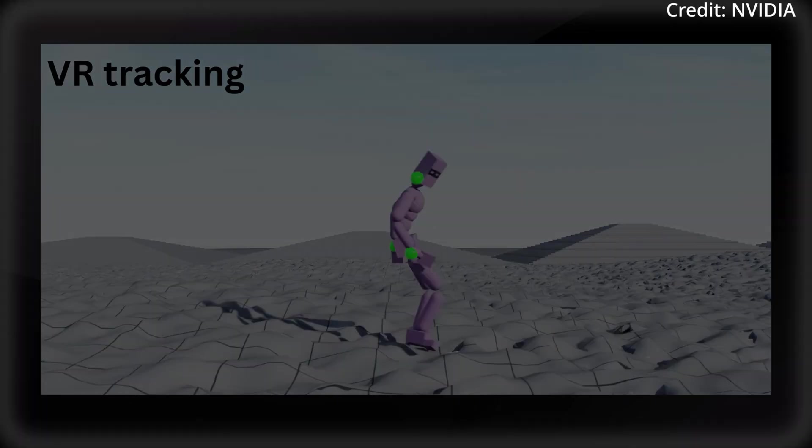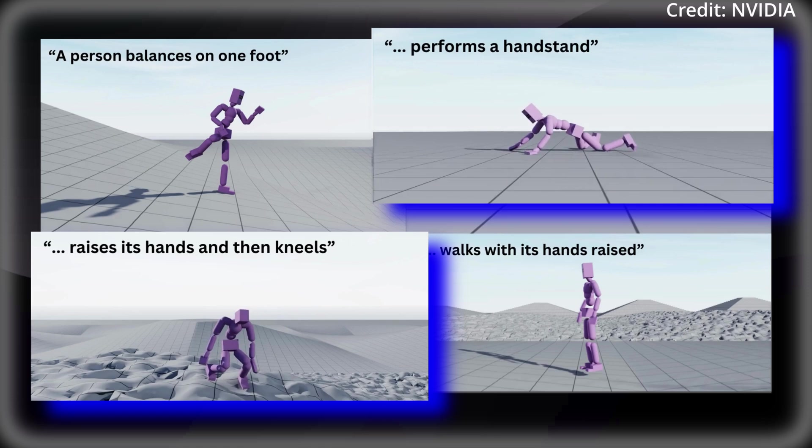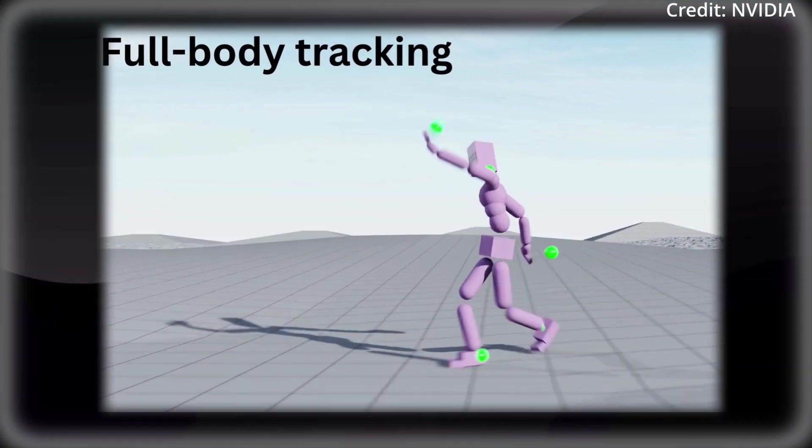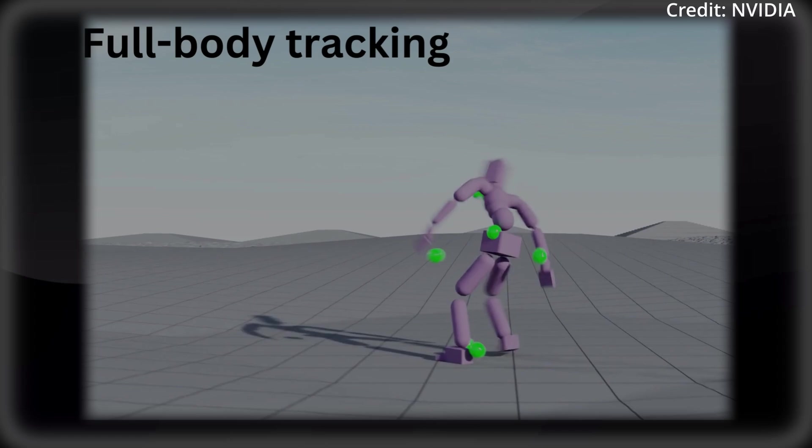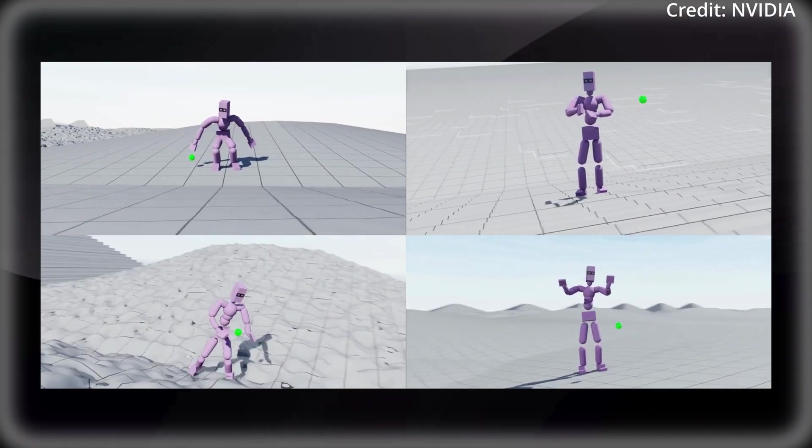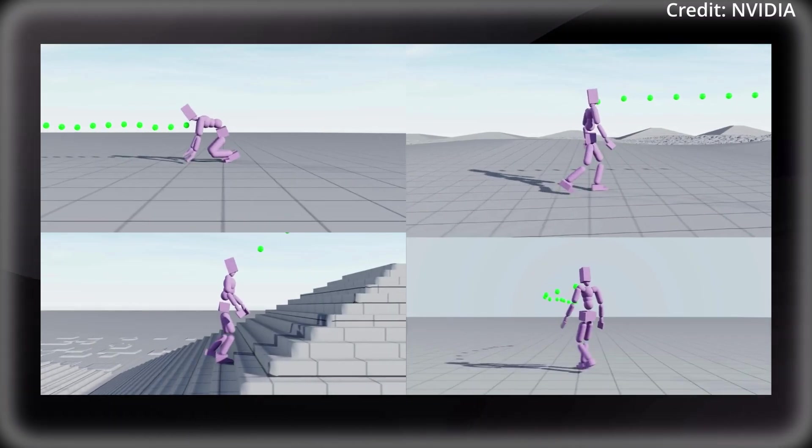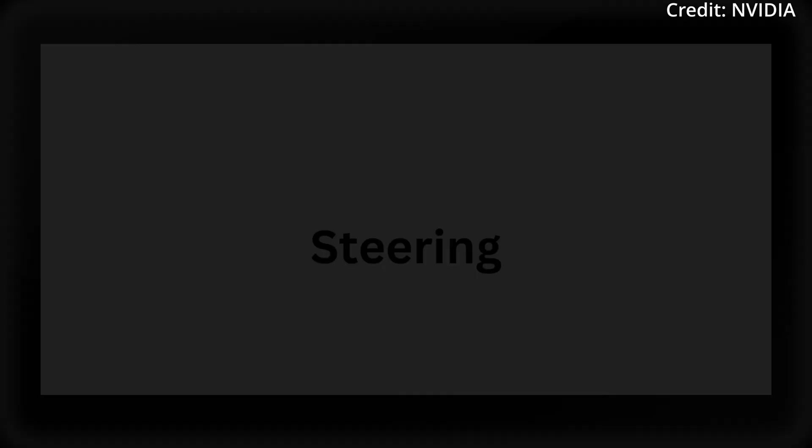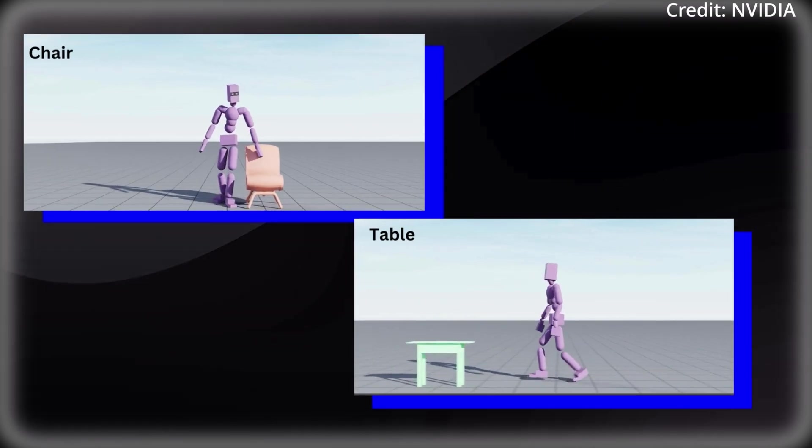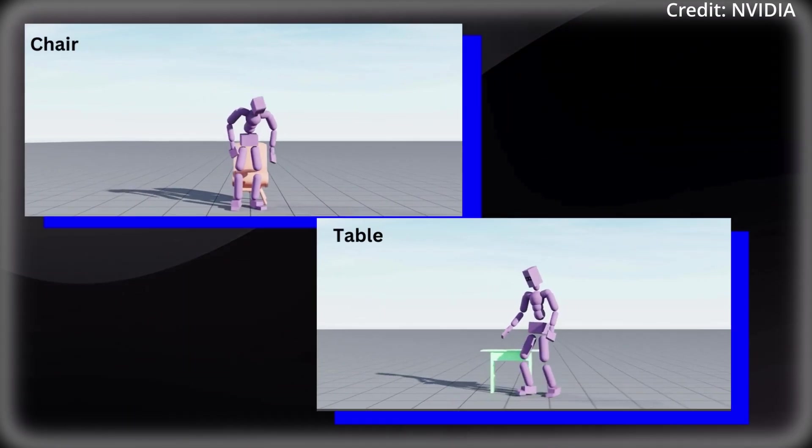The secret to this performance partially lies in the system's architecture being built on a two-stage framework. To start, a full-body motion tracking controller is trained using reinforcement learning, allowing the model to generate actions that guide a physically simulated character through desired motion paths. This controller can navigate variable terrains and interact with objects, laying the foundation for more complex behaviors.